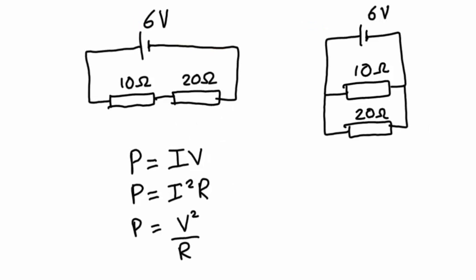Let's begin with a couple of example circuits. Here you'll see we have two resistors — 10 ohm and 20 ohm — connected to a 6 volt power supply. In the left hand circuit this has been done in series, and in the right hand circuit this has been done in parallel. Now at first glance we may assume this will lead to a very similar heating effect in terms of the power dissipated by the resistors. That is not at all true, as I'll show you now.